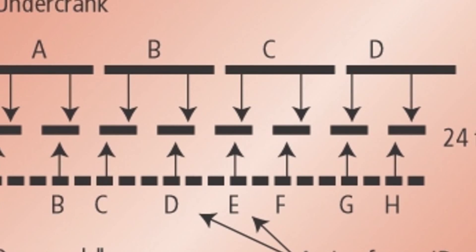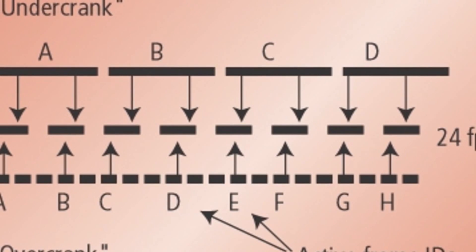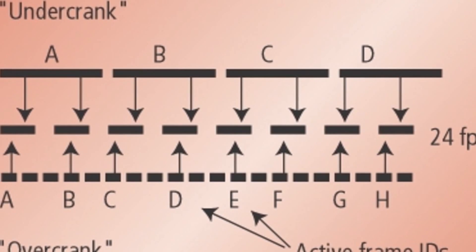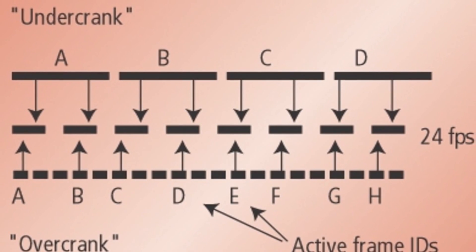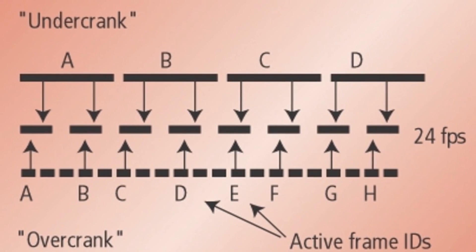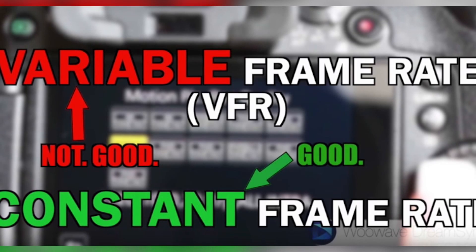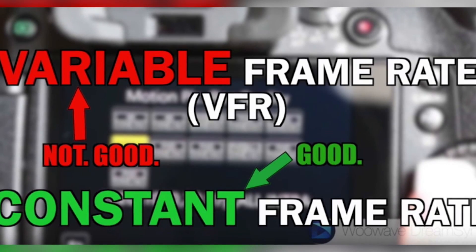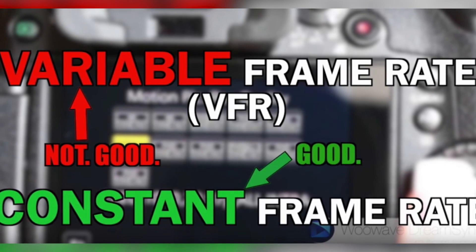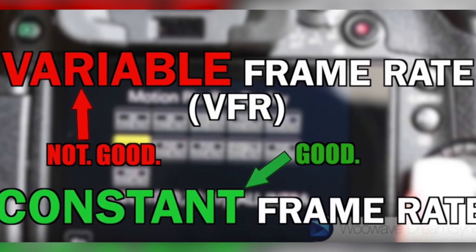After doing some research, I realized that recording devices record in either variable frame rate or constant frame rate. Variable frame rate means that each cycle changes the frames at a different speed throughout the video, making the video a different length inside Adobe Premiere than outside it. That's why if you play the video outside Premiere you'll find it has no problem, but once you import it into Premiere, the audio and video are not in sync.